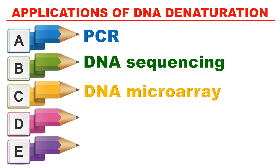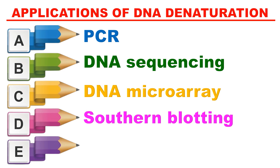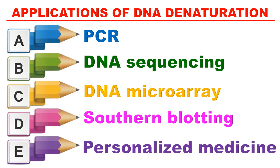DNA microarray is a chip to which single-stranded DNA is attached. To obtain single-stranded DNA, we must first denature it, so denaturation is applied in forming DNA microarrays. Southern blotting is a technique in which two DNA strands are hybridized with each other; for hybridization the strands must be single-stranded, so DNA denaturation is used. Finally, denaturation can also be applied in the development of personalized medicine.